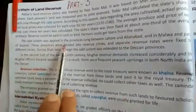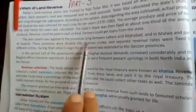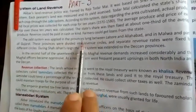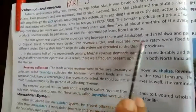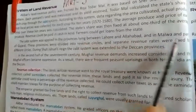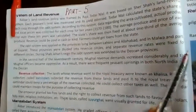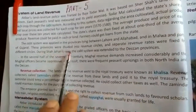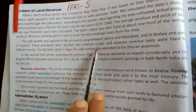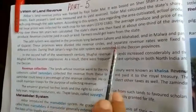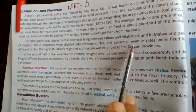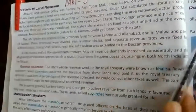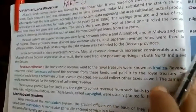The Zabti system was applied in the provinces lying between Lahore and Allahabad, and in Malwa and parts of Gujarat. These provinces were divided into revenue circles, and separate revenue rates were fixed for different circles.